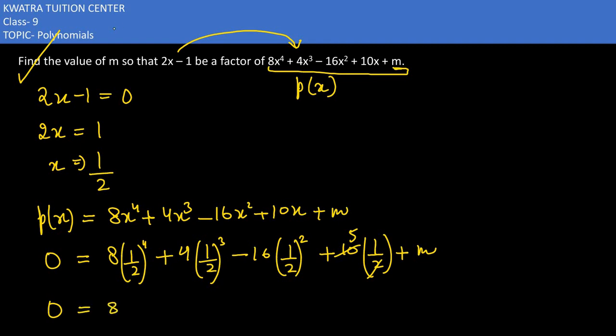0 equals: 8 times 1/16 (since 2 to the power 4 is 16), plus 4 times 1/8 (1/2 to the power 3 is 1/8), minus 16 times 1/4 (1/2 squared), plus 5, plus m.